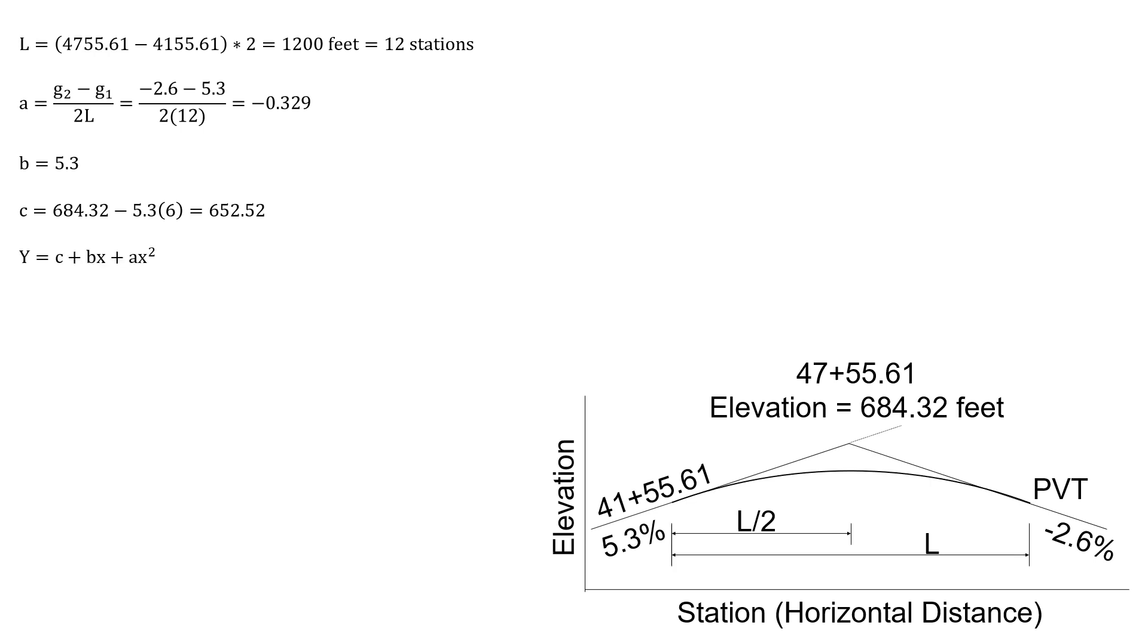Now we have our parabolic equation, Y equals C plus BX plus AX squared. So Y equals 652.52 plus 5.3X minus 0.329X squared.